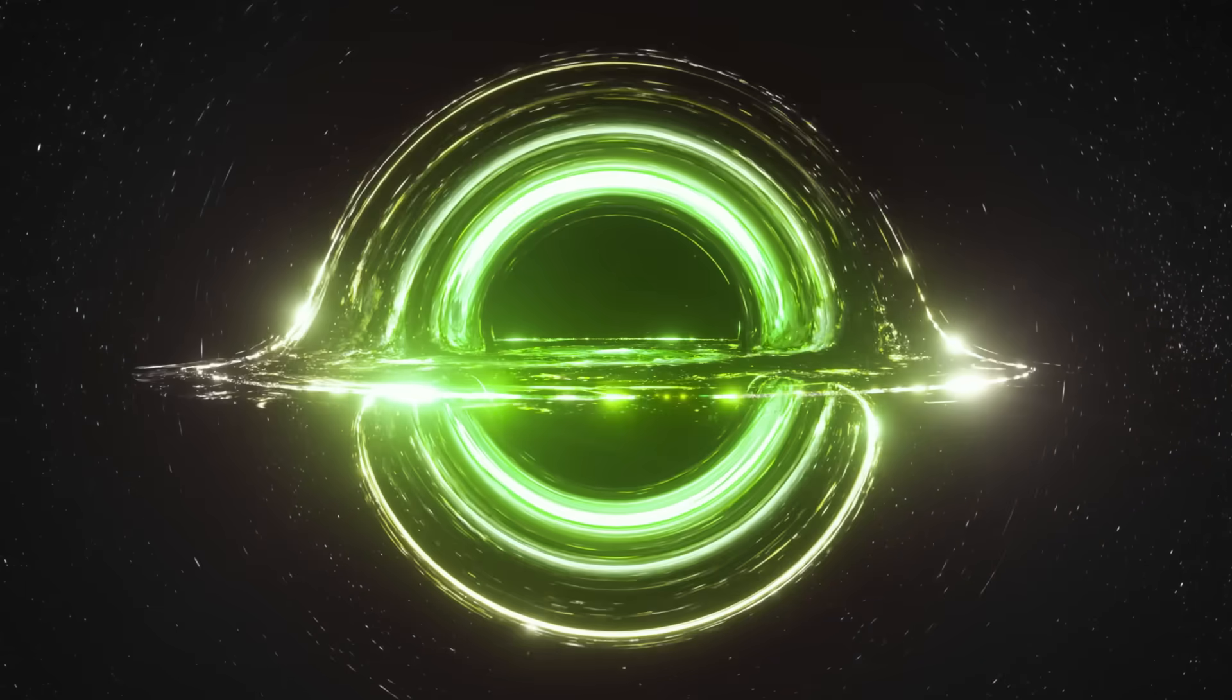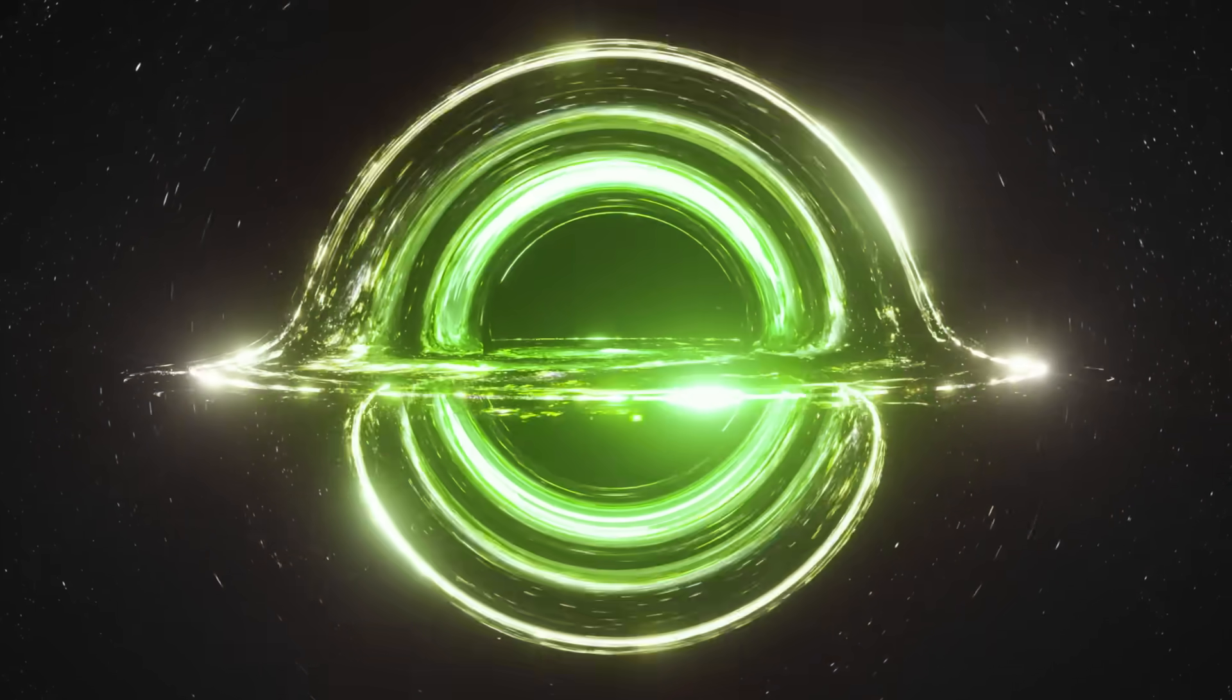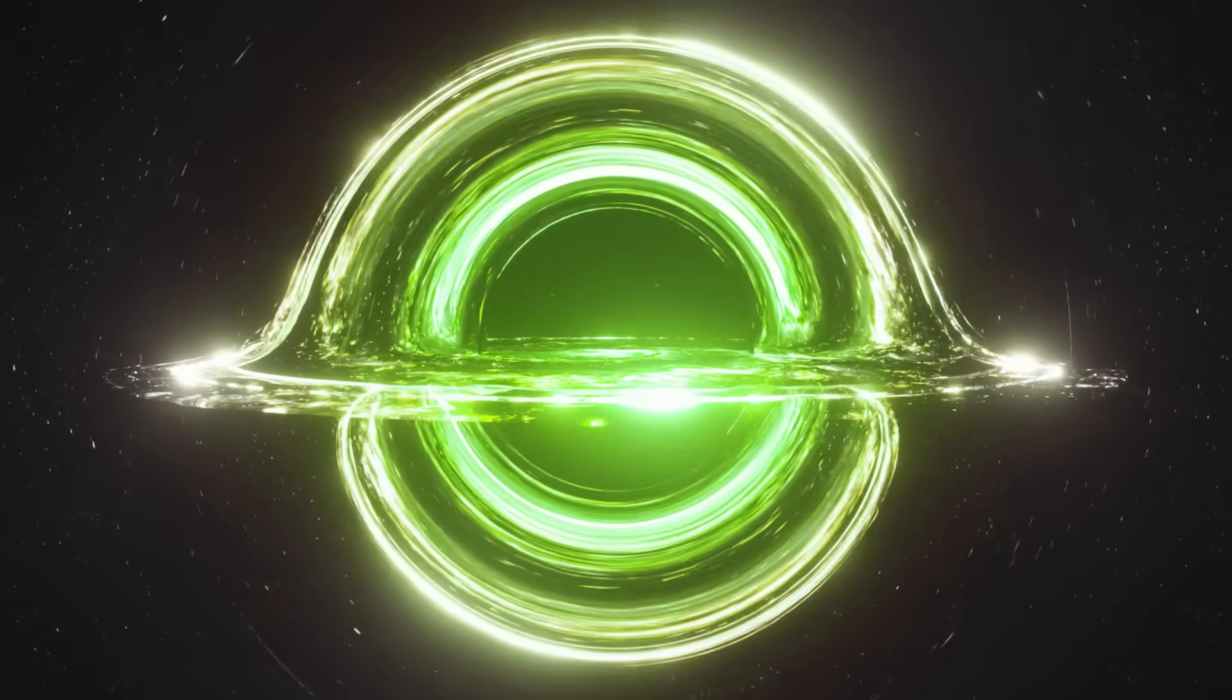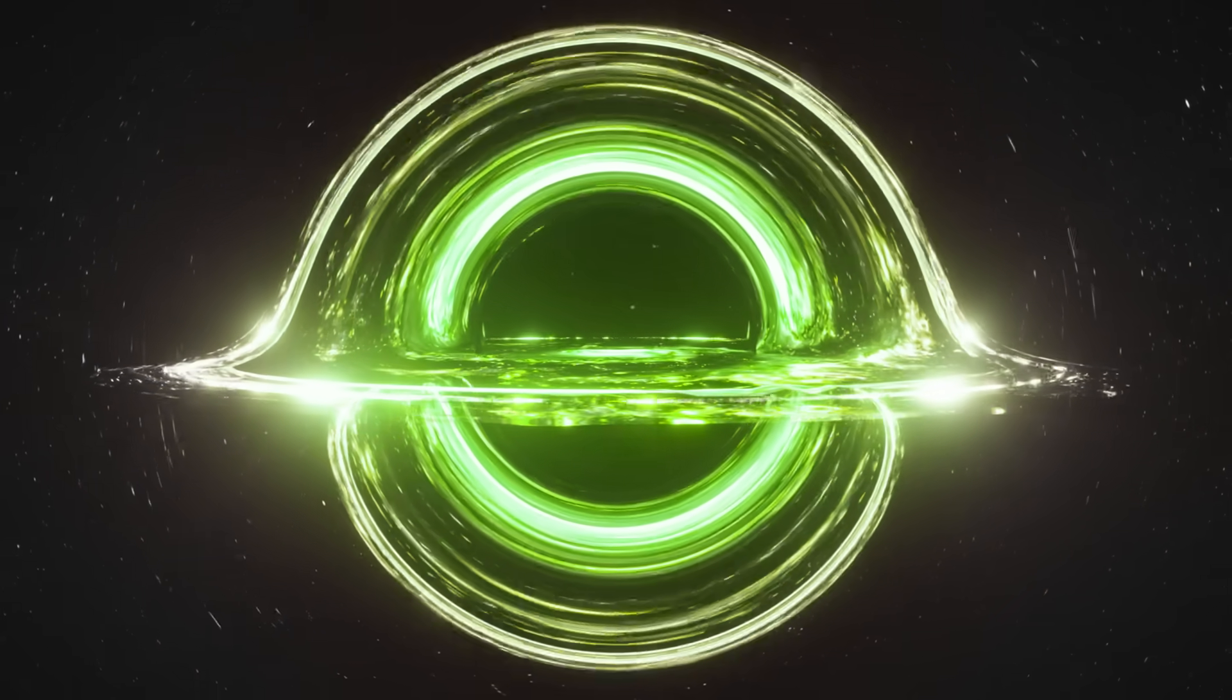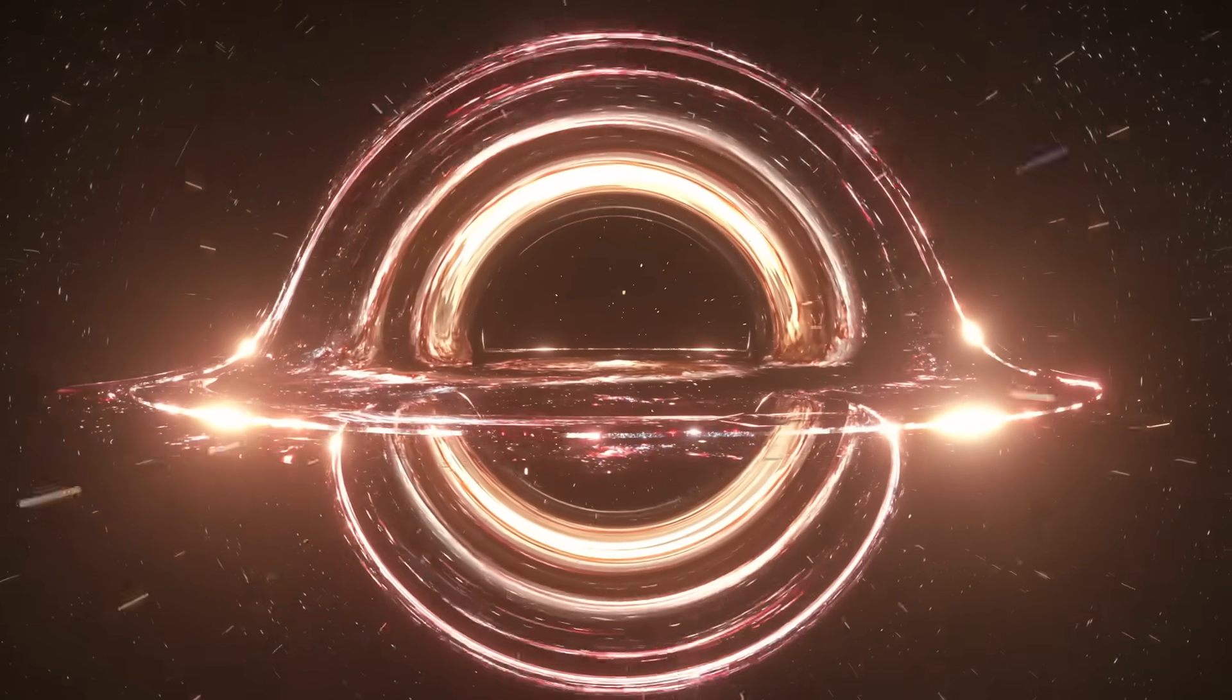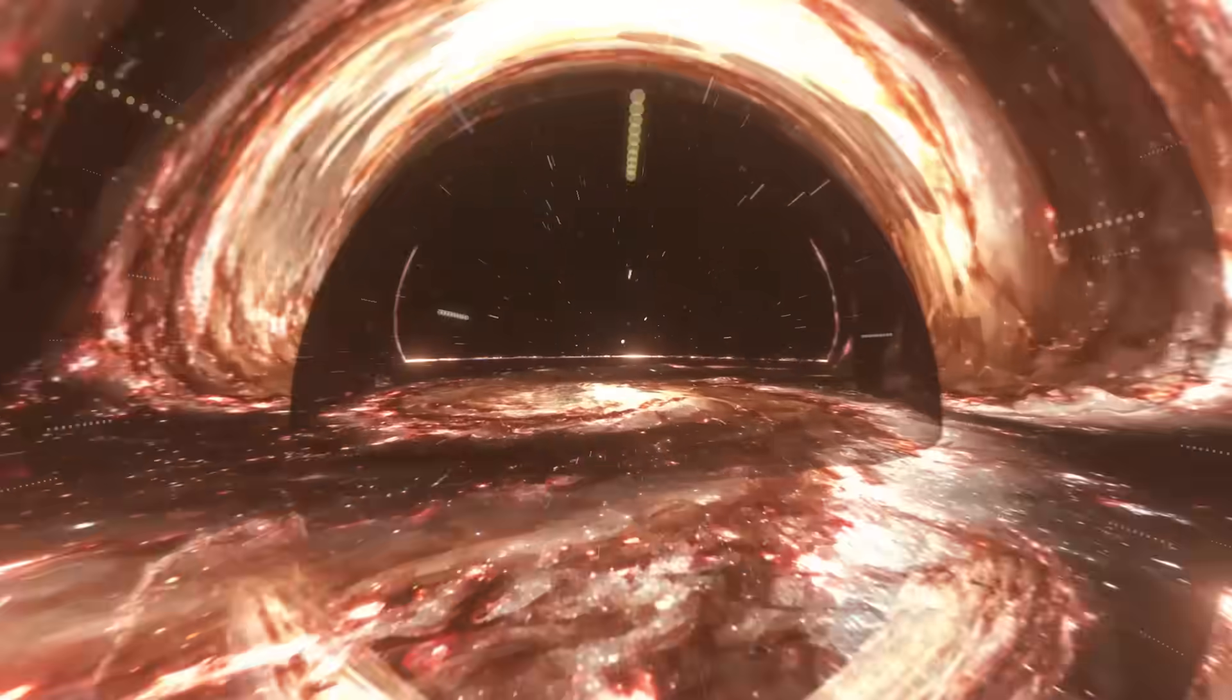Called Kerr black holes, these spinning celestial monsters don't have real singularities, and matter doesn't necessarily end up falling inside their central singularities. Instead, past the event horizon, the centrifugal force creates an almost normal space-time just around ring singularities, where objects can move in different directions, and they might be able to do so for a very long time.